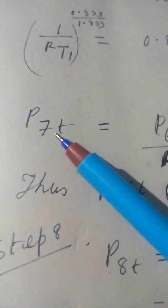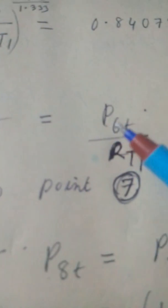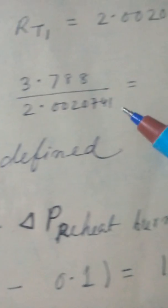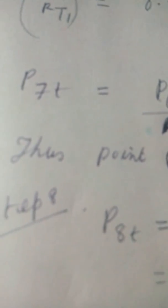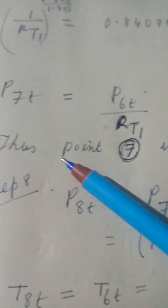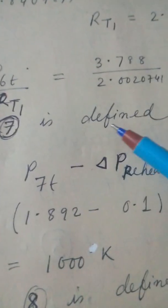Now P7T is equal to P6T by, P7T is equal to P6T by RT1. This is the formula you know, so this is this, like this. kg per centimeter square. P7T. Thus point 7 is defined.